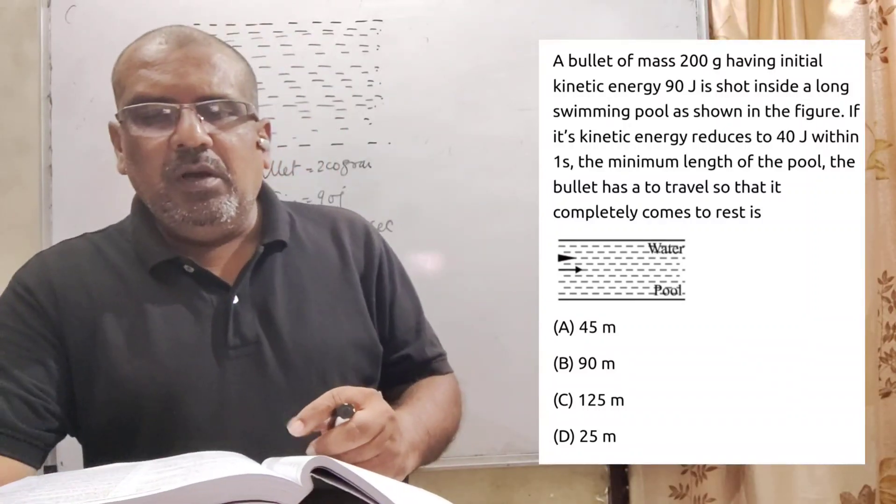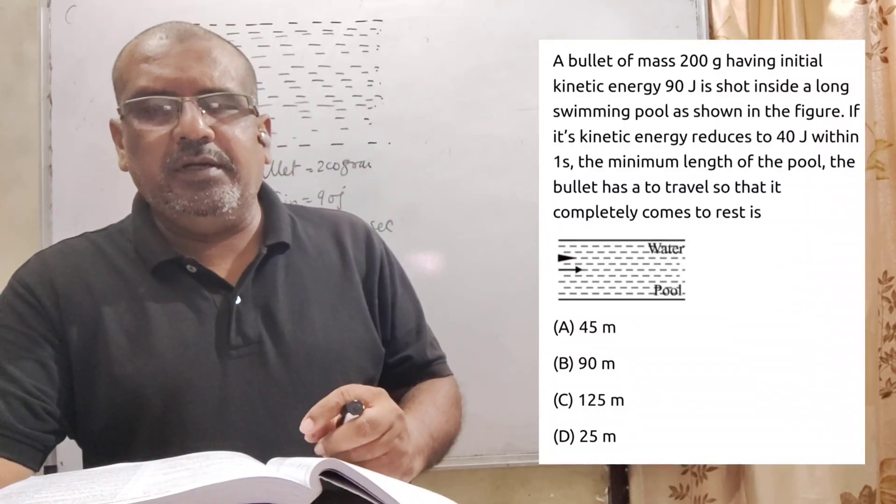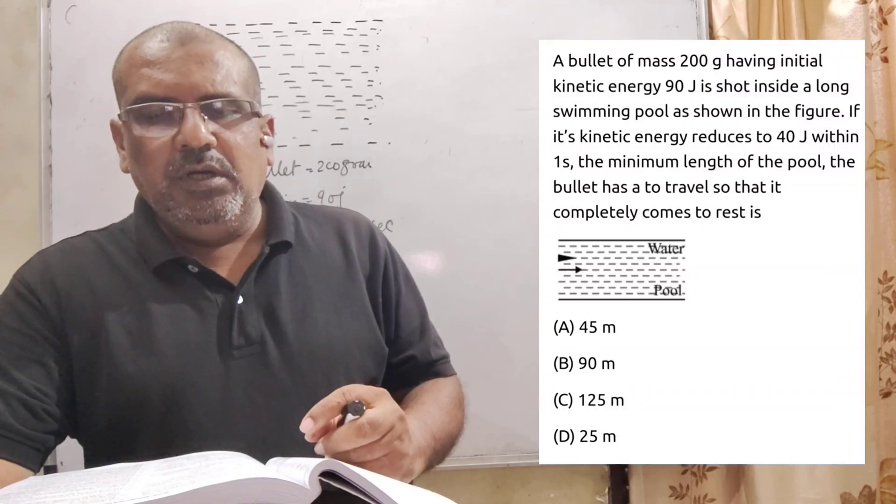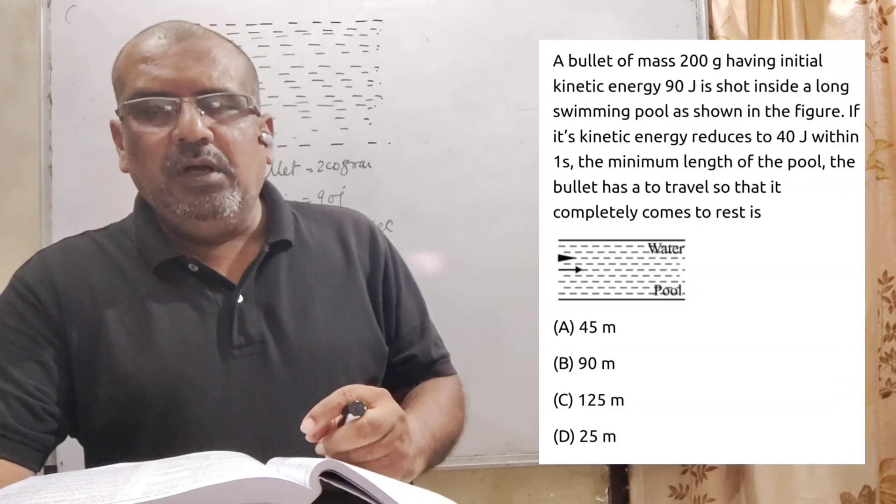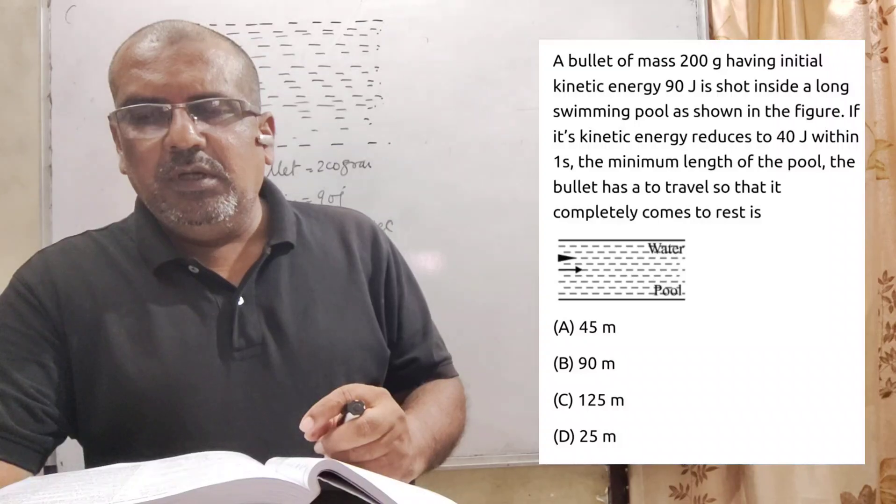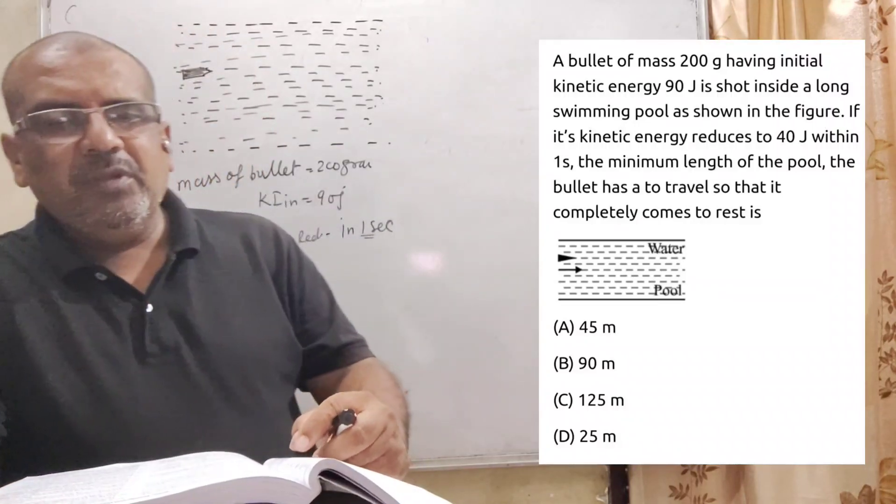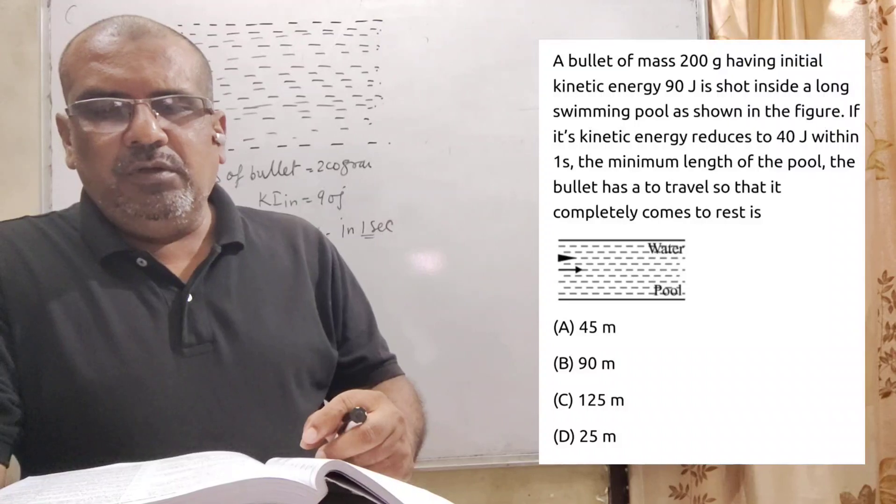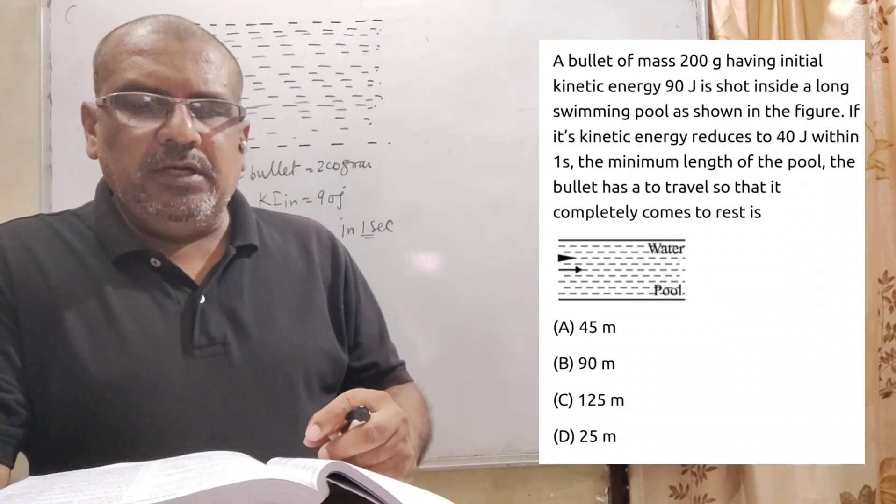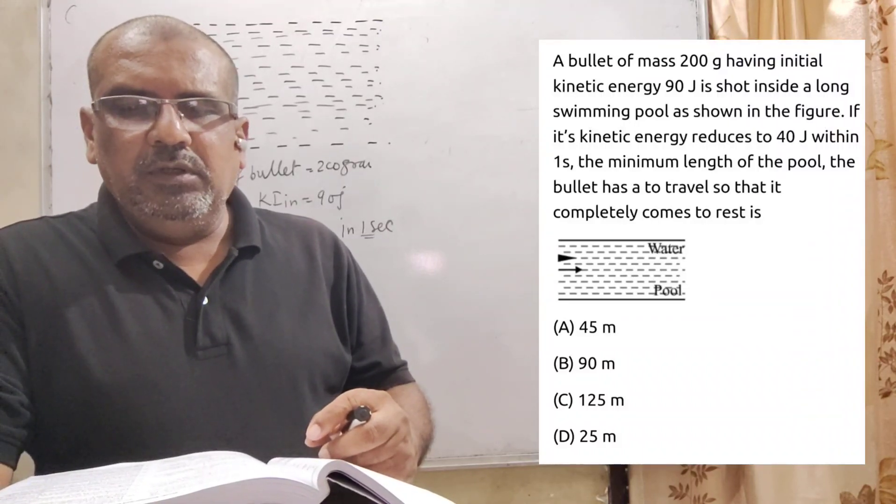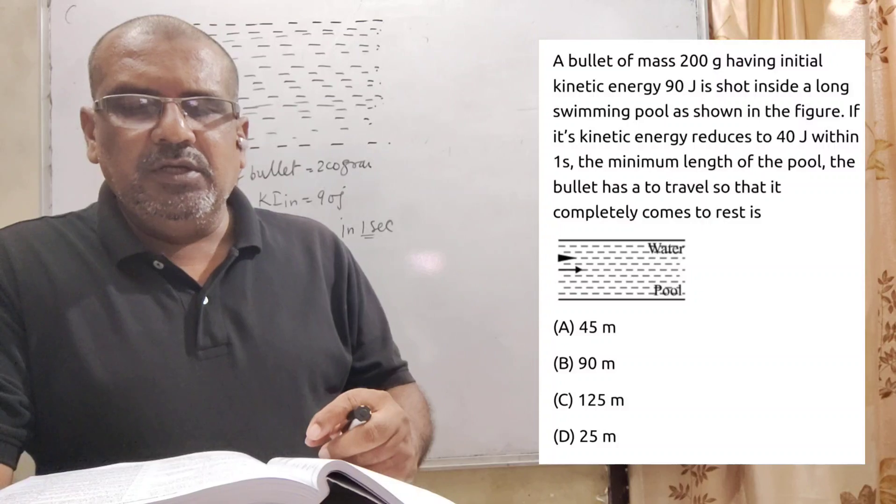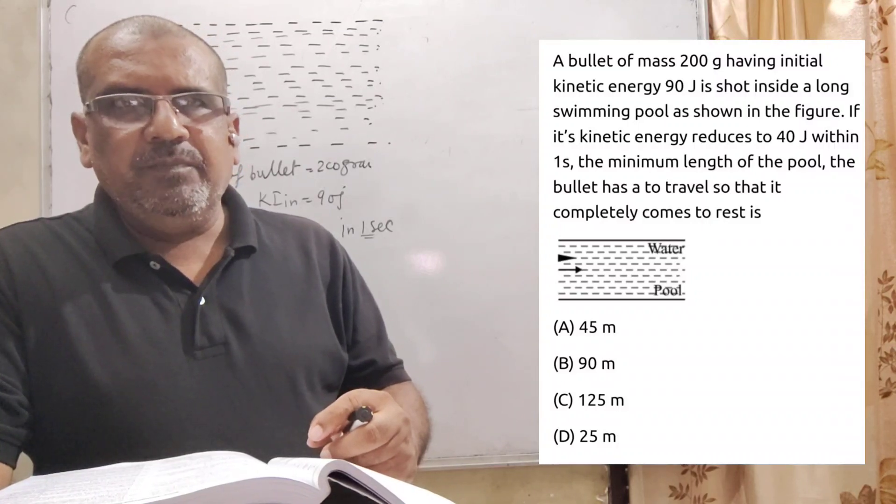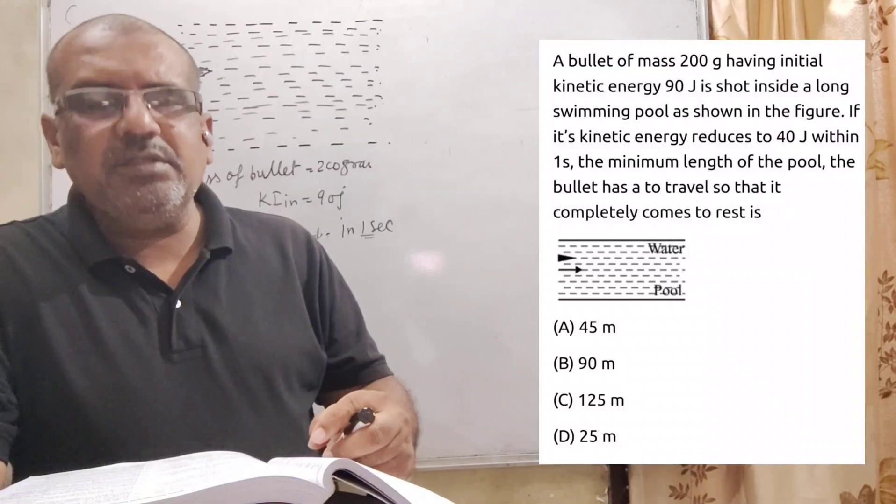Now here is the question. A bullet of mass 200 grams having initial kinetic energy 90 Joules is shot inside a long swimming pool as shown in the figure. If its kinetic energy reduces to 40 Joules within 1 second, find the minimum length of the pool the bullet has to travel so that it completely comes to rest.